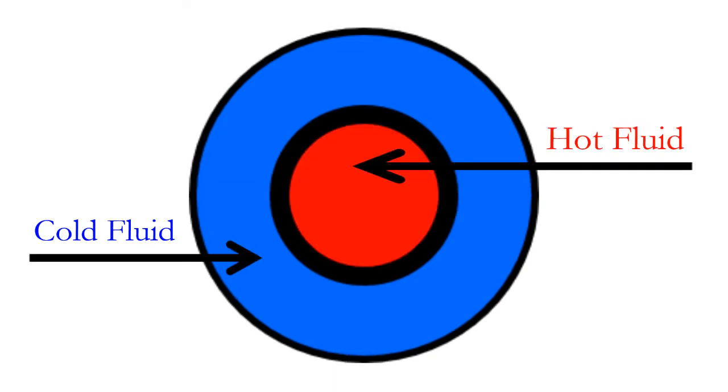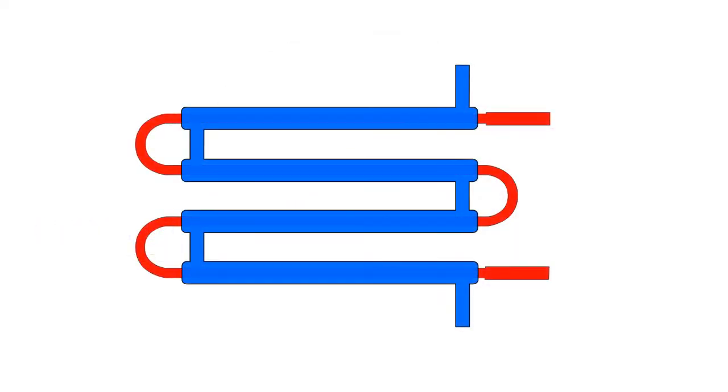Now that we understand the fluid flow area is the open cross-sectional area in the inner pipe and the annular space, let's determine the area for heat transfer.